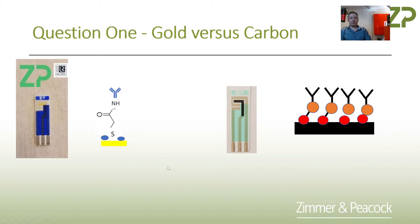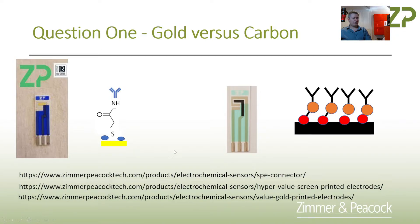So 90% of the time the reason people ask for gold electrodes is really because of molecular assays or immunoassays, and you can definitely use carbon in the place of gold in that case.